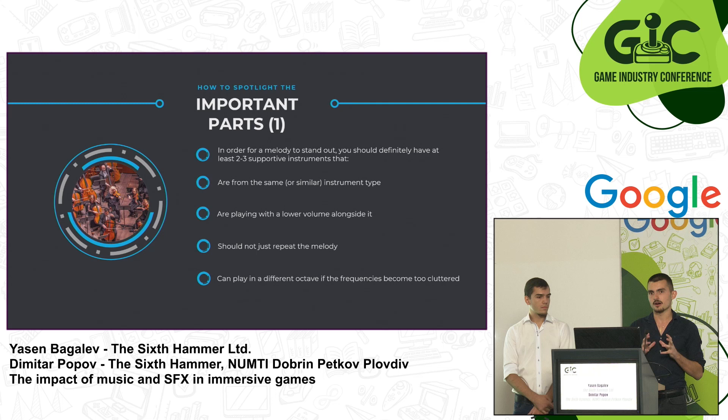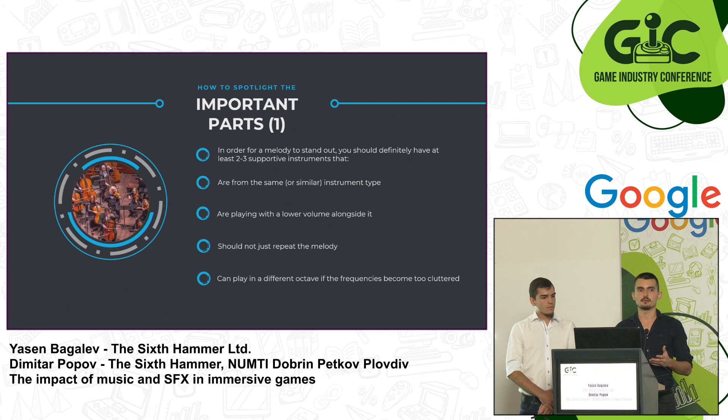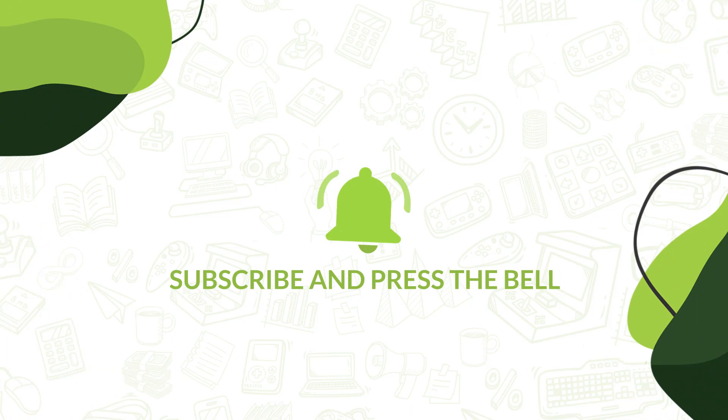How can you be sure that the players are hearing what you want them to hear? For the melody, in order to make it more impactful, try to support it with a few other instruments that play right alongside it. Those instruments can be from the same instrument type — for example, if your melody is played by a cello, you can have a supportive viola or double bass. They should not be clearly distinguishable themselves; they should play with lower intensity and just magnify the impact of the melody without stealing attention from it.